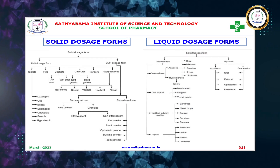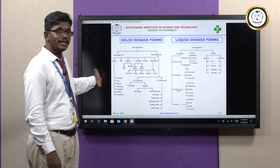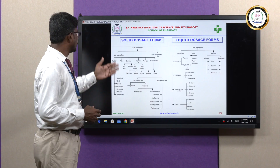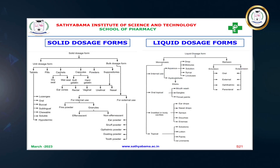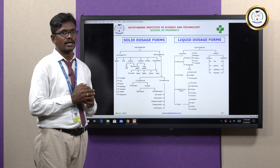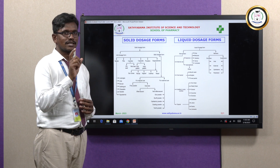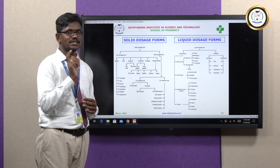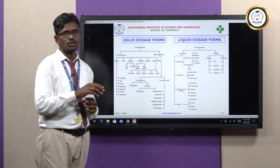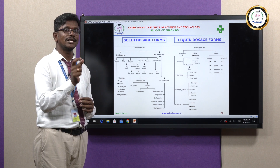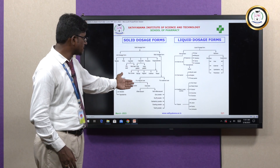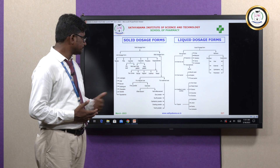The solid dosage form has further classification. Tablets themselves have many types: lozenges, orally administered tablets, buccal tablets, sublingual tablets, chewable tablets, and soluble hypodermic tablets. Next are pills and cachets — cachets are of two types: dry cachets and wet seal cachets. Capsules are of two types: hard gelatin capsules and soft gelatin capsules. Hard gelatin capsules contain two parts — a cap and a body — and enclose dry powders or granules. Soft gelatin capsules are a single unit enclosing a liquid medicament. Powders, suppositories, and bulk dosage forms for internal and external use include ear powders, snuff powders, ophthalmic powders, dusting powders, and tooth powders.